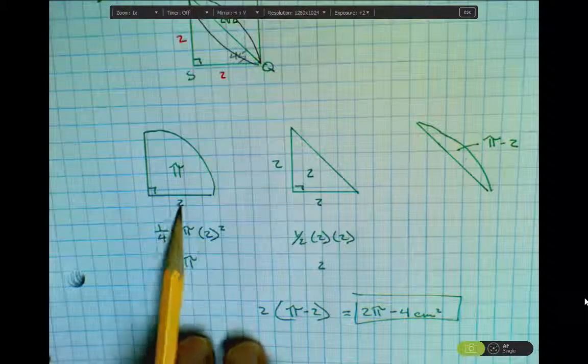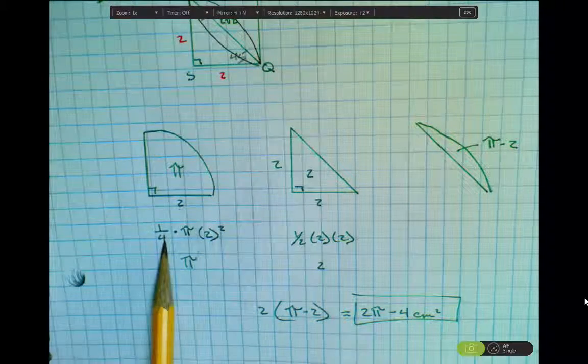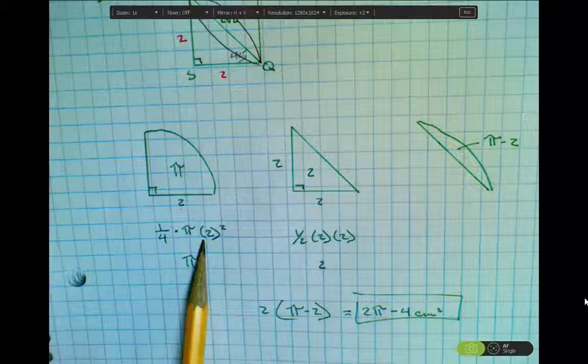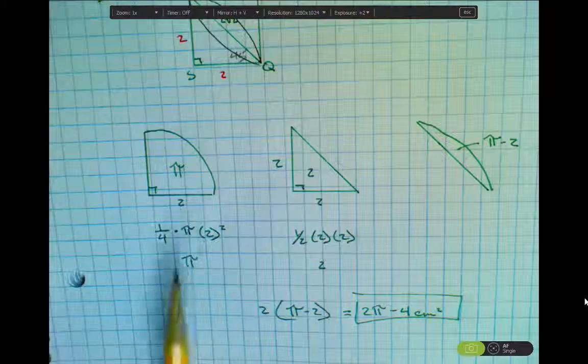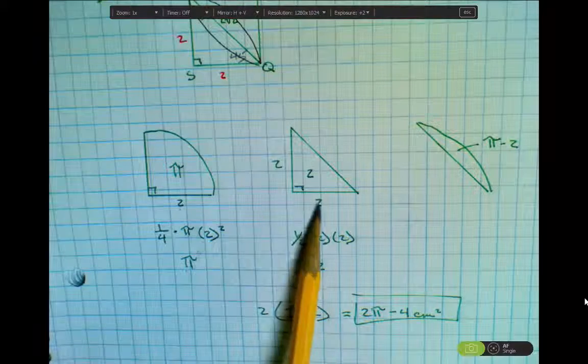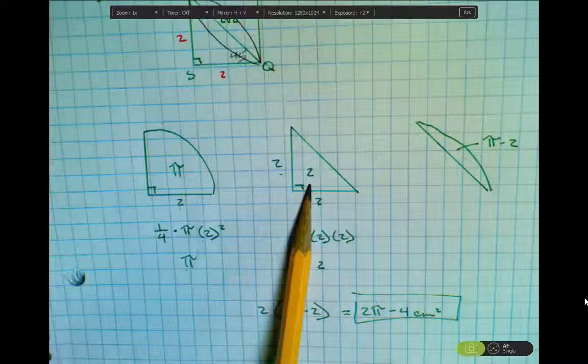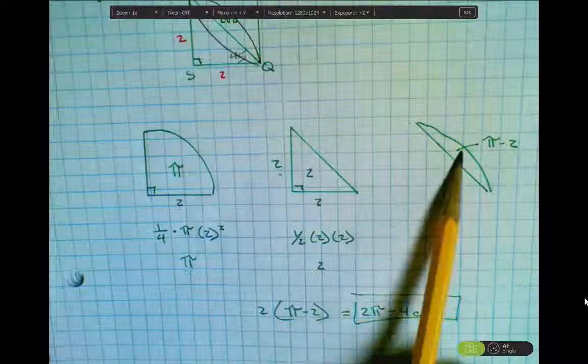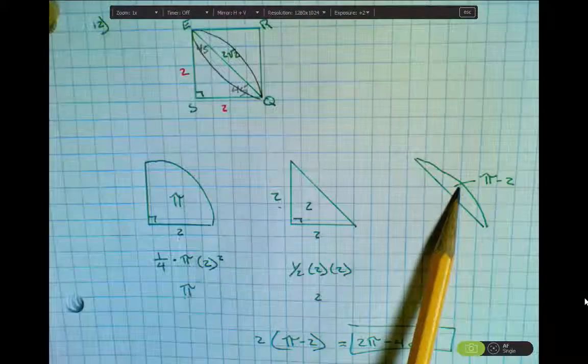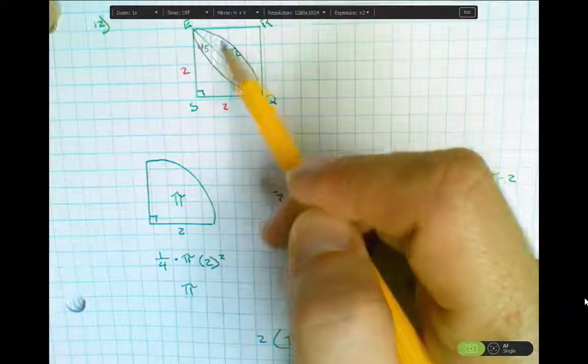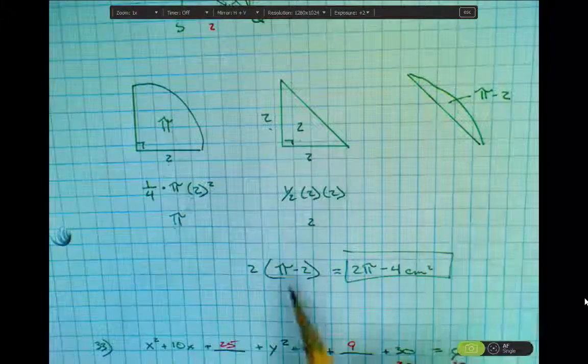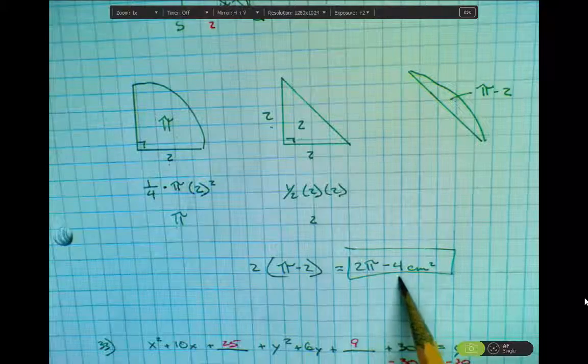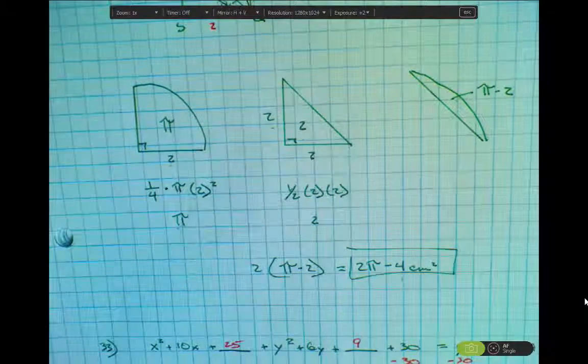So I start by finding the area of the sector. So the sector represents one quarter of a circle. So 1 fourth times pi times 2 squared turns out to be pi. Find the area of a triangle, base times height divided by 2, the area is 2. If I subtract those two values, I get this segment. You can see here in the diagram we have two segments. We have one on the top, we have one on the bottom. So if I take the area of one segment and multiply by 2, I get the area of the shaded region, which is 2 pi minus 4 square millimeters.